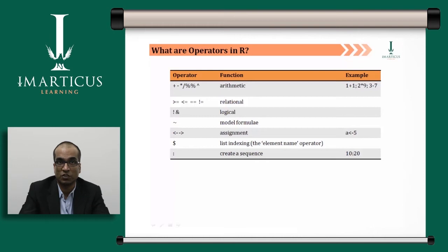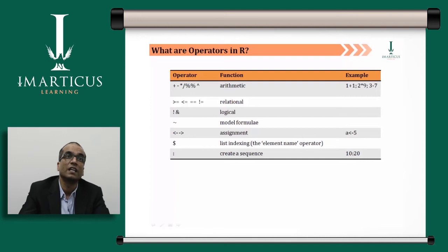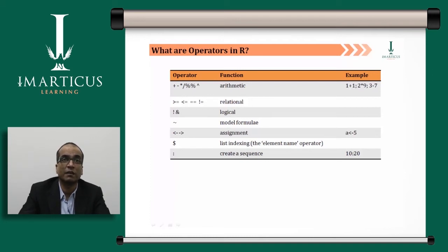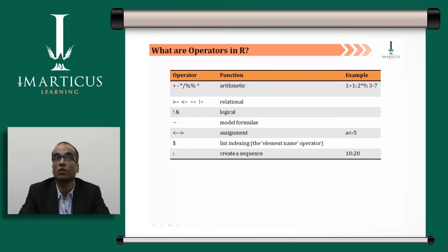You can also use double-ampersand (&&), which has some difference in the way it works. For model formulas, the tilde (~) sign is used, found at the extreme left of your keyboard. The assignment operator (<-) can also be written as (->), meaning you assign something from left to right, but the previous notation is preferred. The dollar sign ($) is used as a list separator to access individual columns in a data frame, and the colon (:) creates a sequence — for example, 10:20 creates a sequence from 10 to 20.